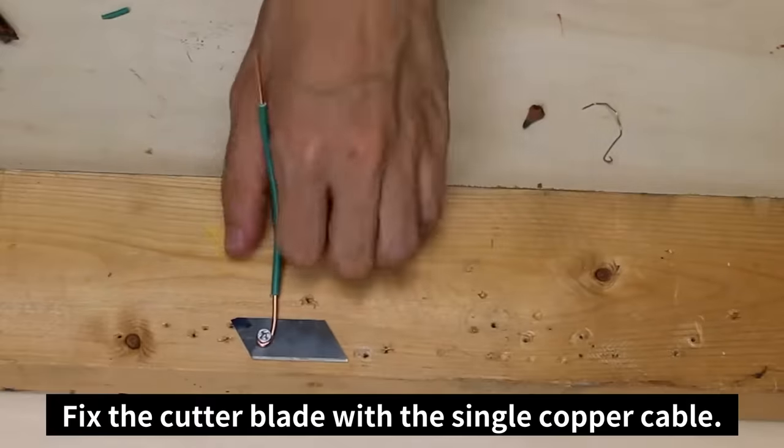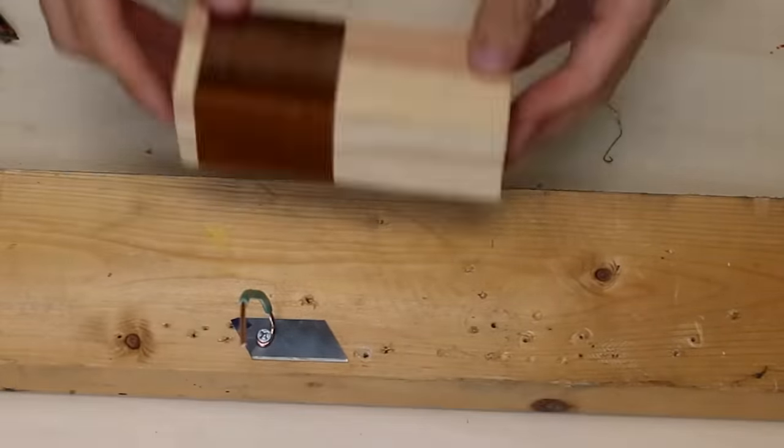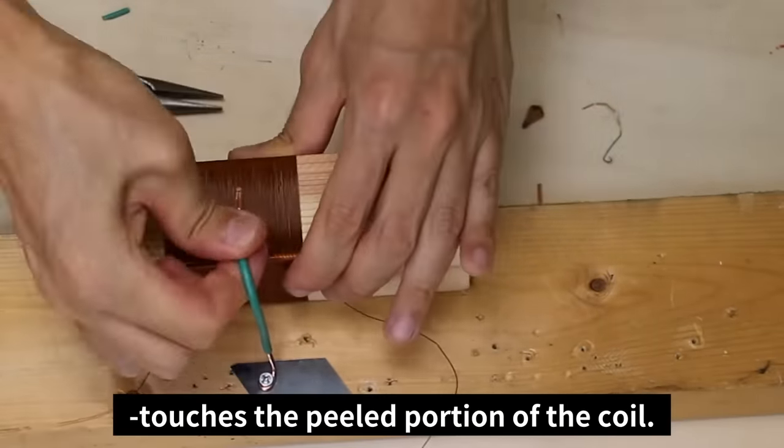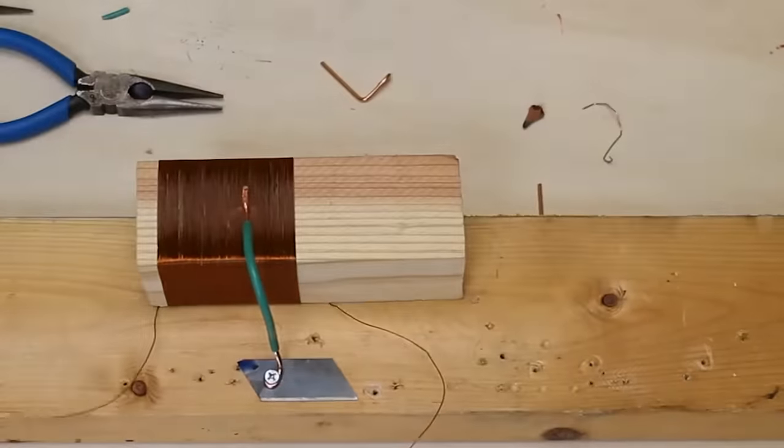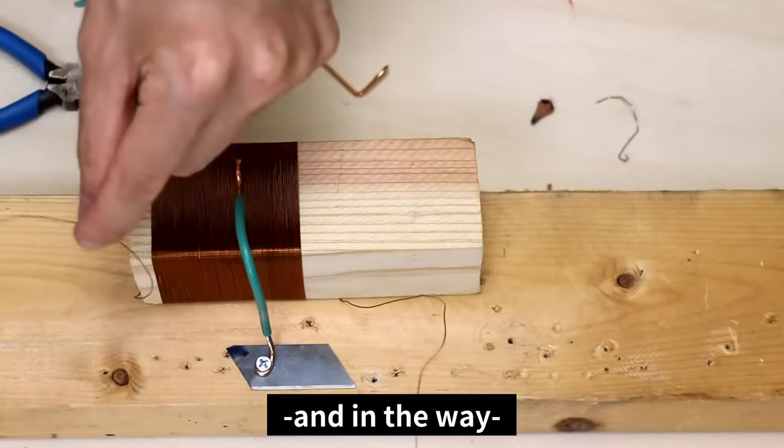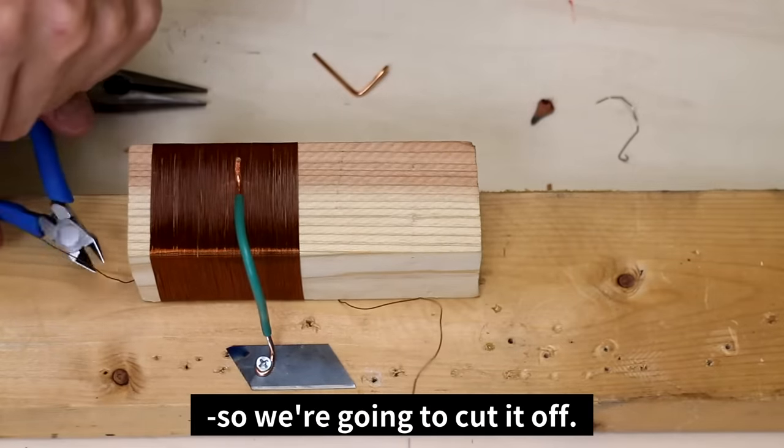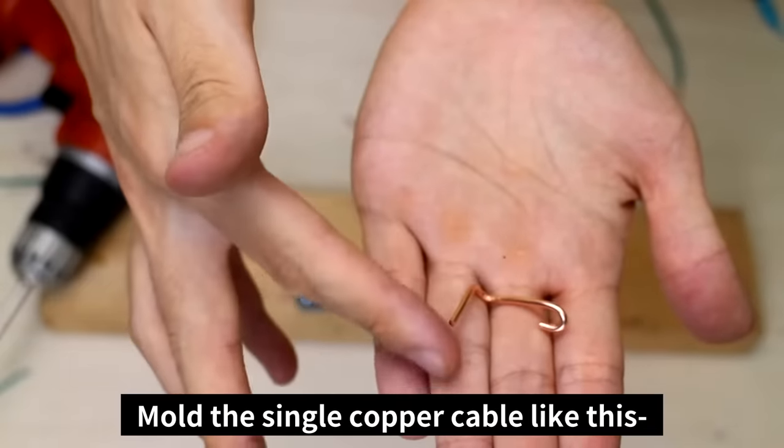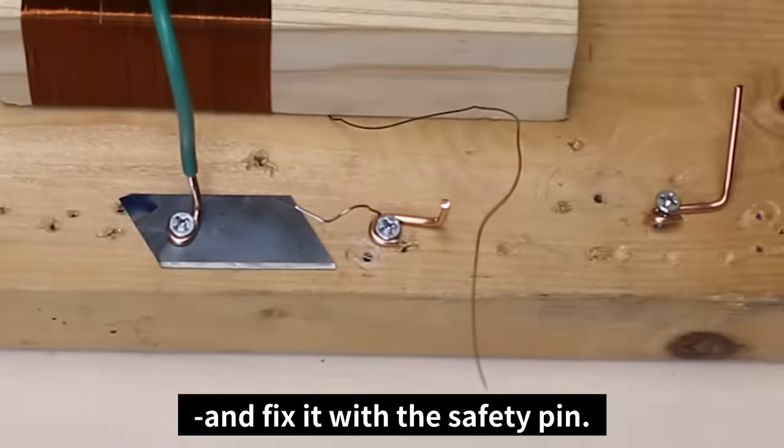Fix the cutter blade with a single copper cable. Make sure the cable touches the peeled portion of the coil. Out of the two ends of the coil, one side is open and in the way. So, we're going to cut it off.